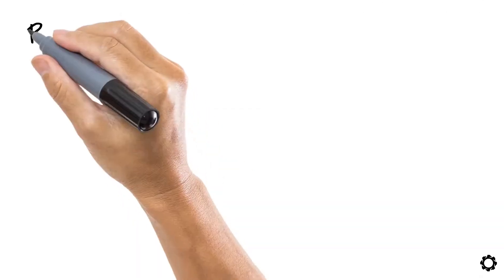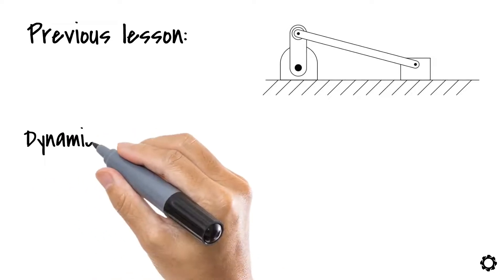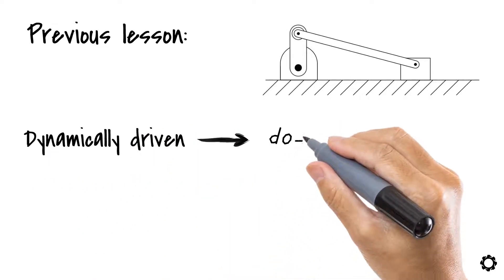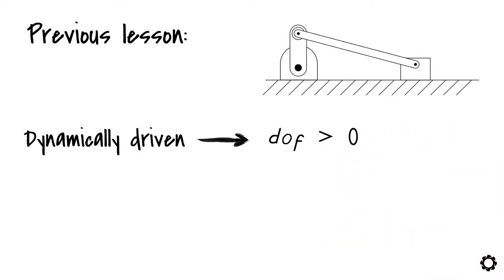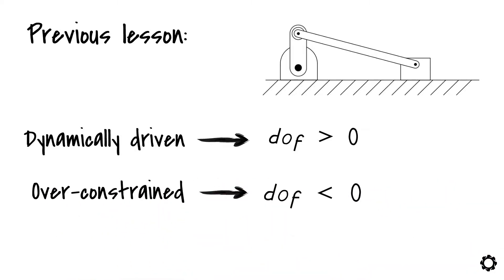To recap, in the previous lesson we said that a mechanism can be called a dynamically driven mechanism if the number of resultant degrees of freedom are positive and larger than zero. We also said that if the number of degrees of freedom is negative, we are in the presence of an over-constrained system. Finally, we said that if the resultant number of degrees of freedom was zero, then we can call that system a kinematically driven system.